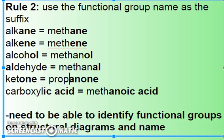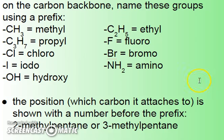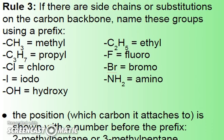You need to be able to identify the functional group on structural diagrams and come up with the names. Rule number three has to do with the other stuff that can be attached — besides a functional group on the carbon backbone, you can have side chains or substitutions. A side chain is when you have another carbon group branching off: one carbon is a methyl group, two carbons is an ethyl group, three carbons is a propyl group, four is butyl, and five is pentyl.